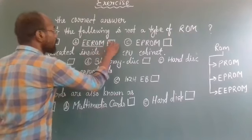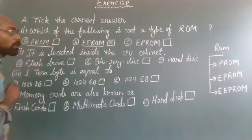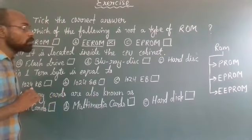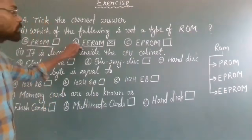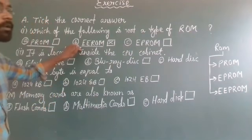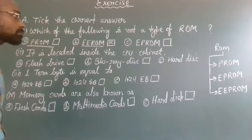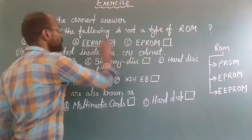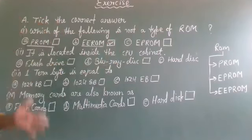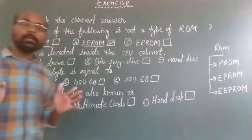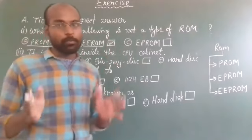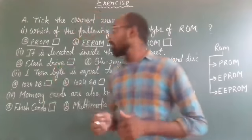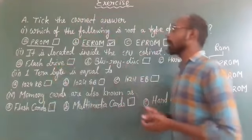WEROM is not a type of ROM. And EPROM is also a type of ROM. So your correct answer is option number B. You have to stick on option number B. WROM is not a type of ROM. If you have chosen option number B, then well done.